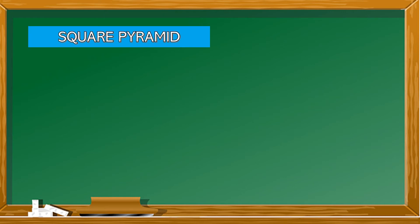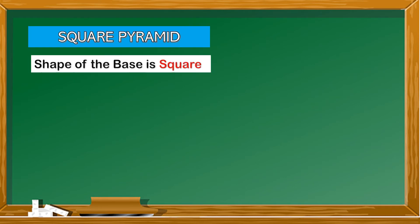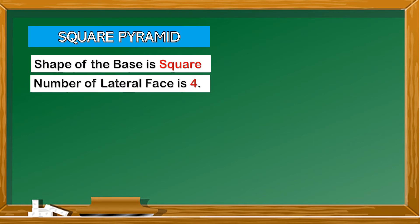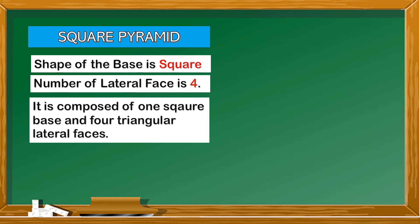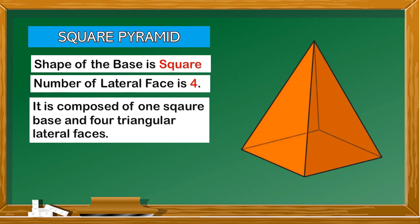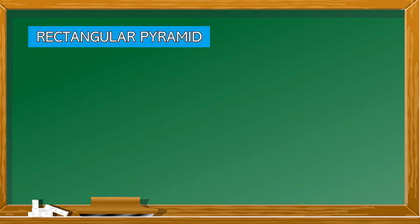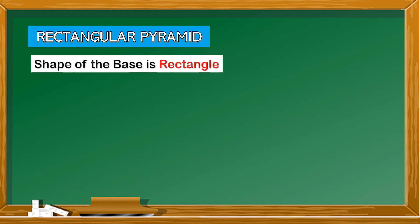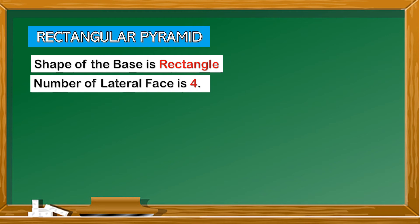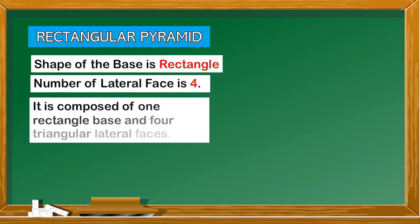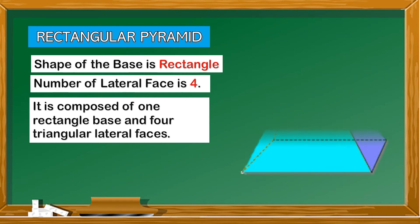Square pyramid: the shape of the base is a square and the number of lateral faces is 4. It is composed of one rectangular base and four triangular lateral faces. Here is an example of a square pyramid. Rectangular pyramid: the shape of the base is a rectangle and the number of lateral faces is 4. It is composed of one rectangular base and four triangular lateral faces. Here is an example of a rectangular pyramid.